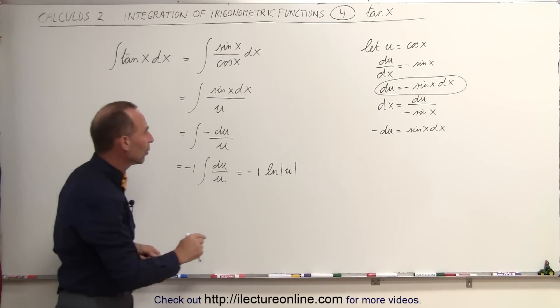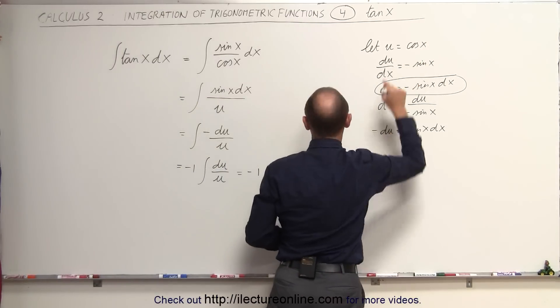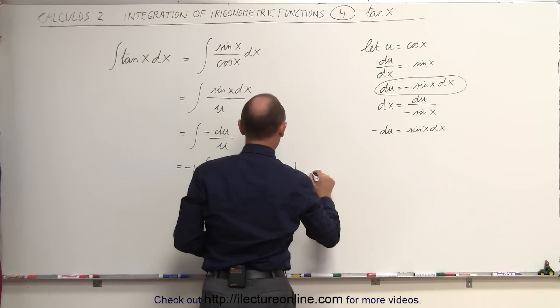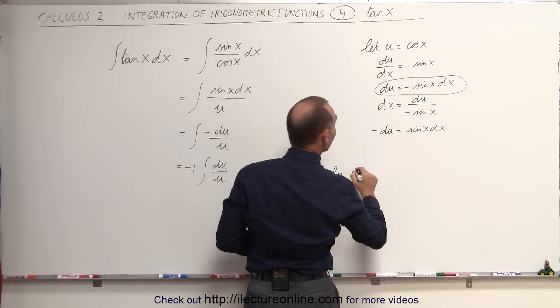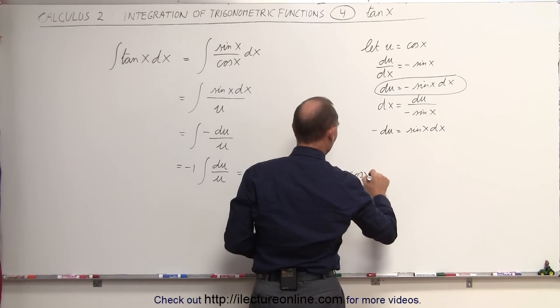And then if we replace what u is equal to, we can go back over here and say this is equal to minus 1 times the natural log of the cosine of x.